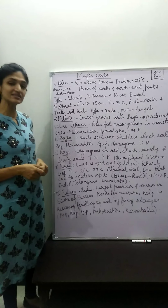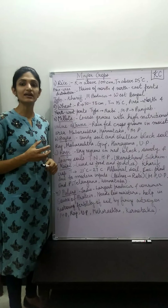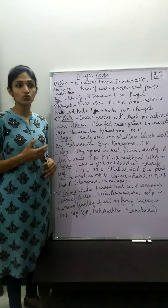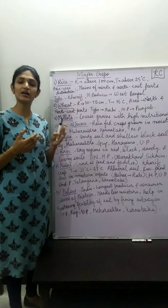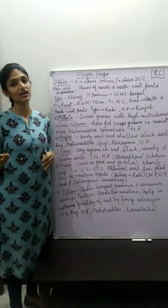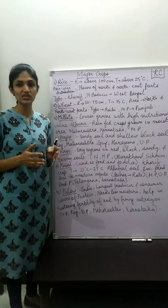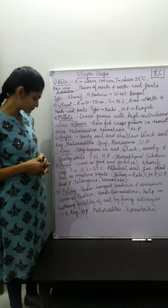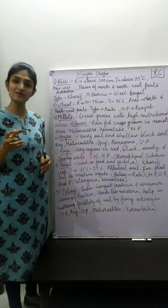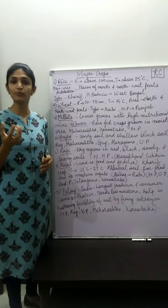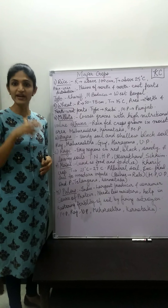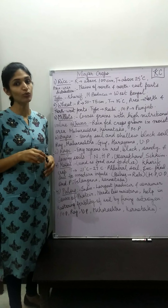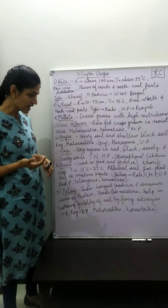The last category is pulses. India is the most important producer as well as the biggest consumer of pulses. Pulses are basically a major source of protein — the maximum protein which we get in the vegetarian diet comes through pulses only.